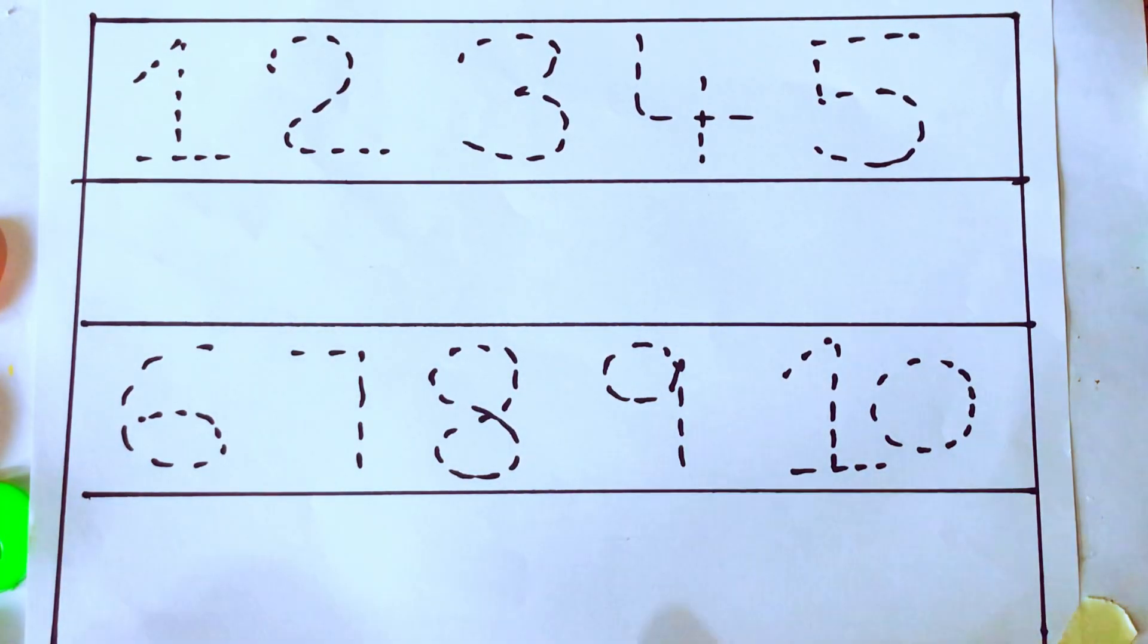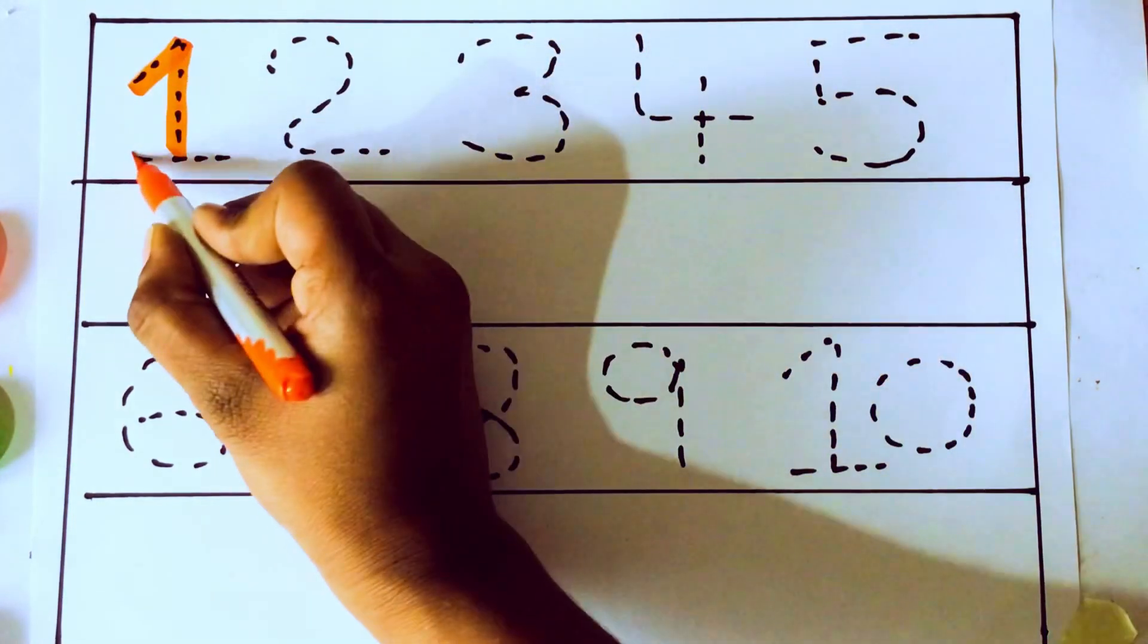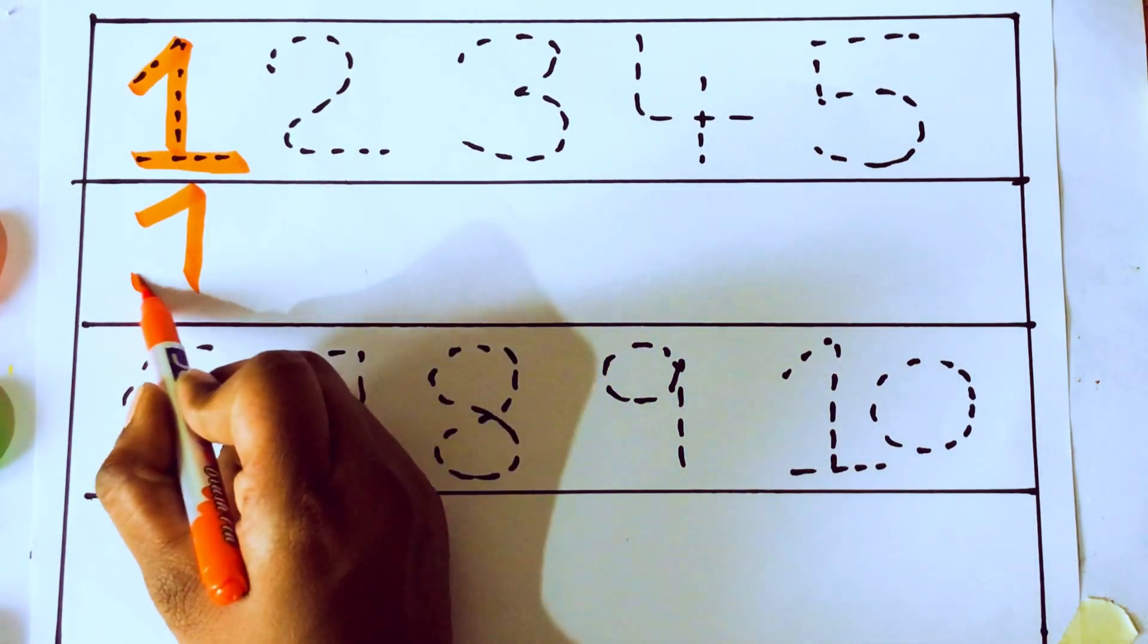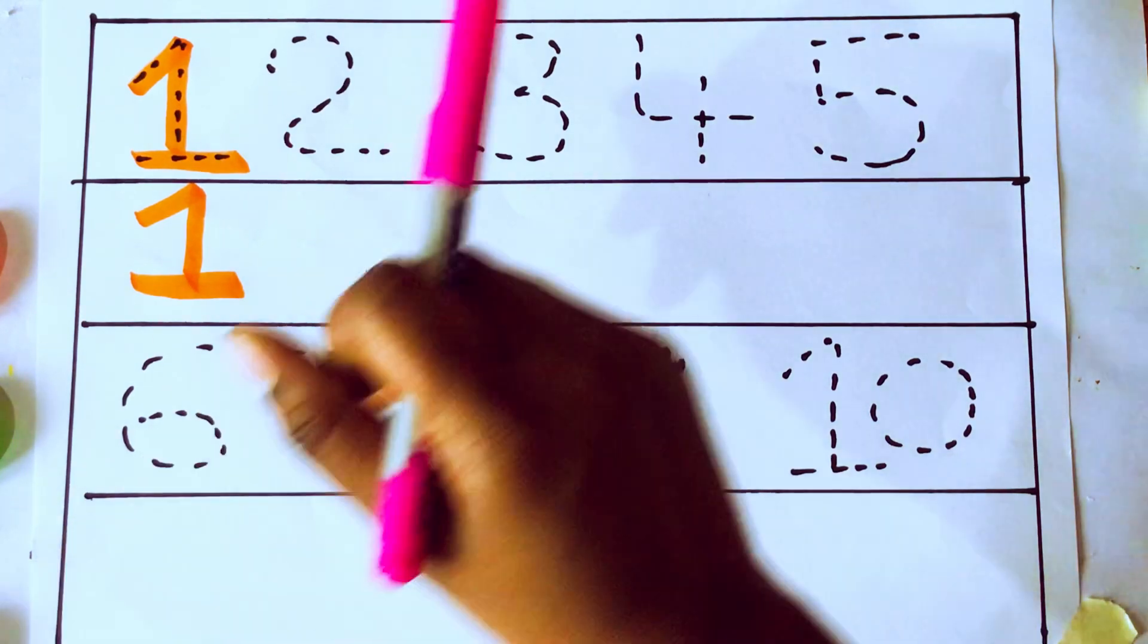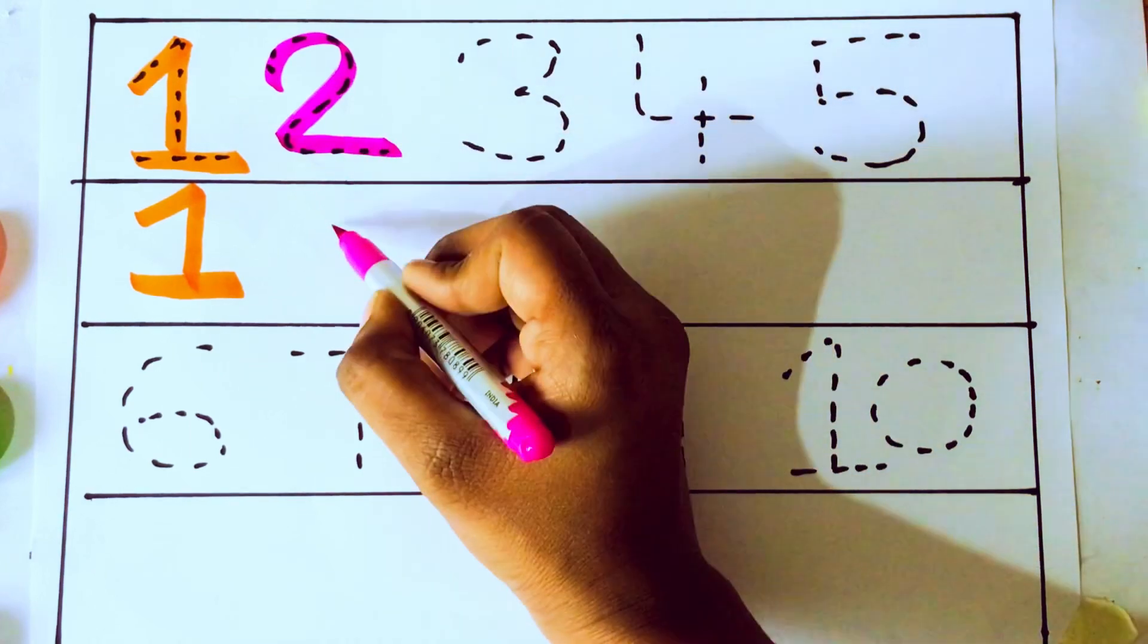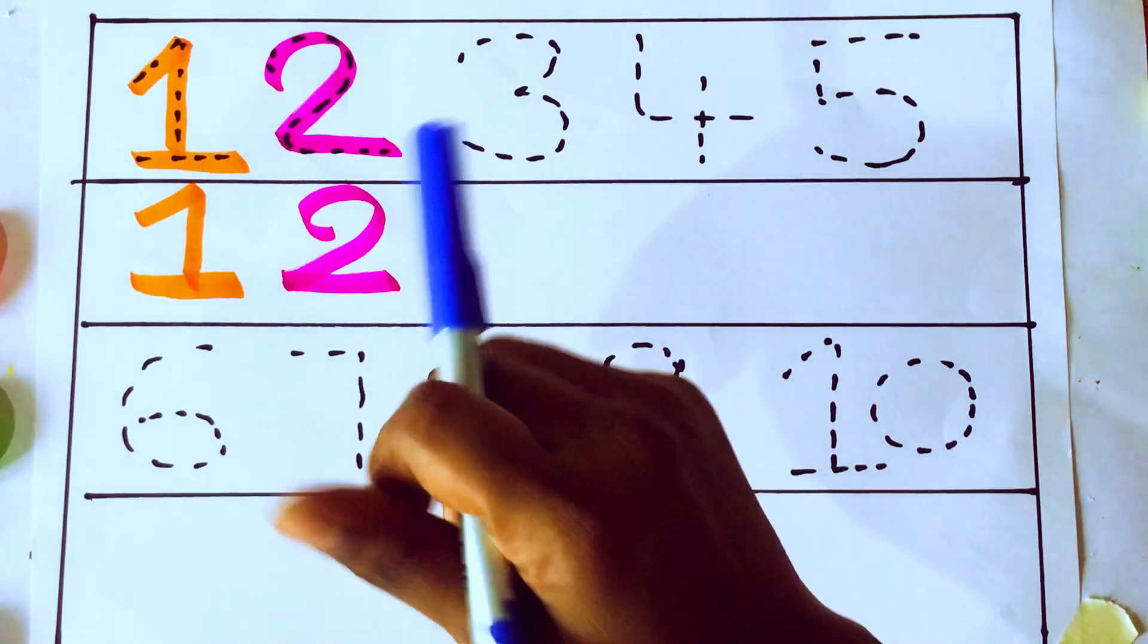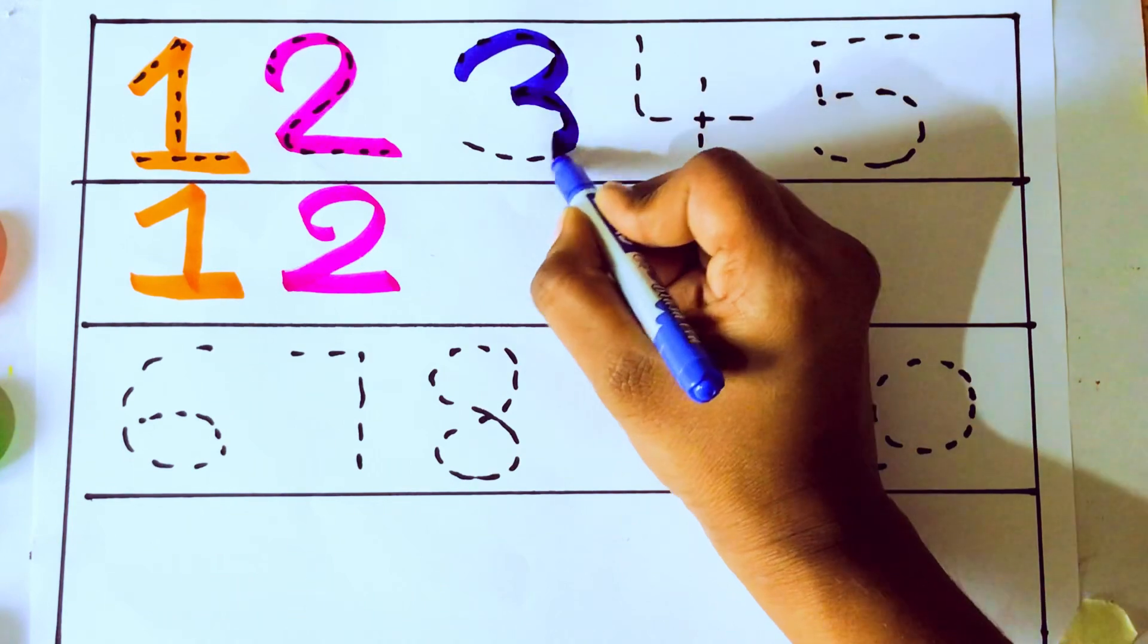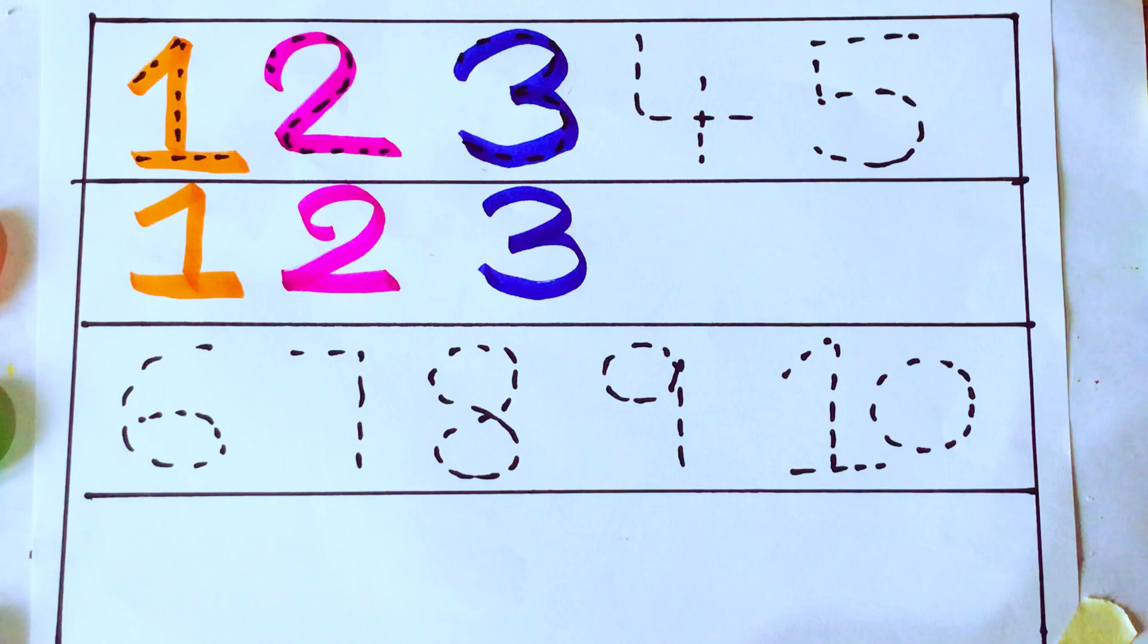Let's draw the numbers. Orange color, 1, O-N-E-1, and you are writing your number. O-N-E-1. Pink color. Blue color, 2 after 3, T-H-R-E-E 3.